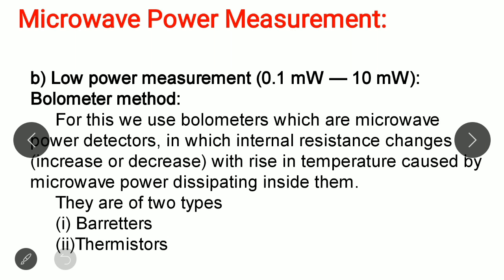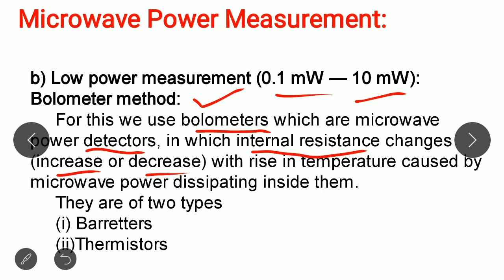Next is low power measurement, in the range 0.1 mW to 10 mW. For this we utilize a bolometer method. A bolometer is a microwave power detector in which the internal resistance changes — either increases or decreases — with a rise in temperature caused by microwave power dissipating inside it. There are two types of bolometer devices: barretters and thermistors.